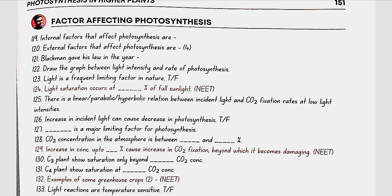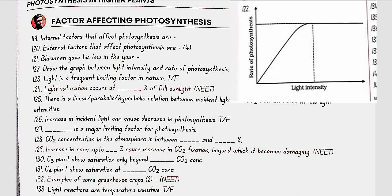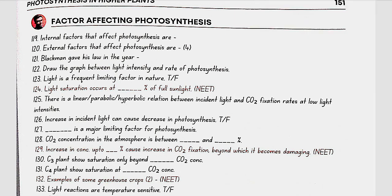A graph between light intensity and rate of photosynthesis is referenced here. Light saturation occurs at 10% of full sunlight. Light is rarely a limiting factor in nature. There is a linear relation between incident light and CO2 fixation rates at low light intensity. Increase in incident light can cause a decrease in photosynthesis due to breakdown of chlorophyll.